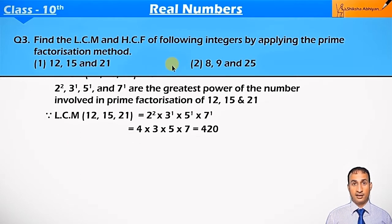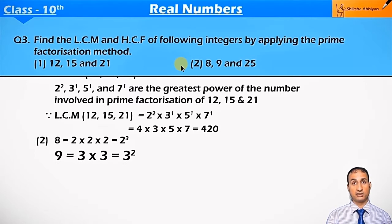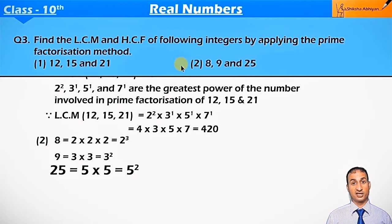Now see the second part. Here, the numbers are 8 and its prime factorization is 2 × 2 × 2, that is 2³. And 9, that is prime factorization 3 × 3, that is 3². And 25, its prime factorization is 5 × 5, that is 5².